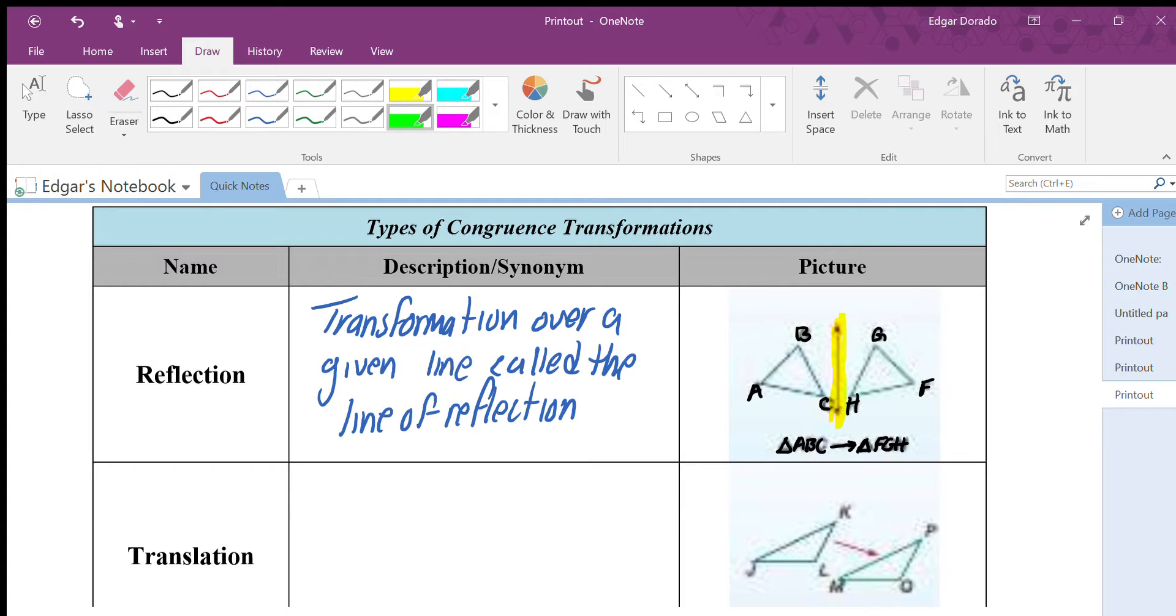So in this case, again, just to be clear. This A is being transformed to this F. This B is being transformed to this G. And finally, this C is being transformed to that H. So hopefully that makes a little bit more sense.